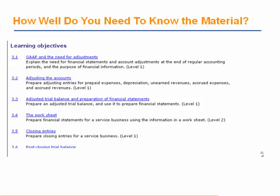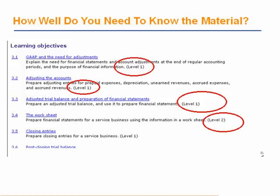In this example, you see 3.1 GAP and the need for adjustment. It is telling me that I have to know this at a Level 1. We've also got adjusting entries also at a Level 1 — I've got to really master that. And for the worksheet, I need to know it at a Level 2. What's the difference between a Level 1 and a Level 2? Let's go through all that and figure it out.